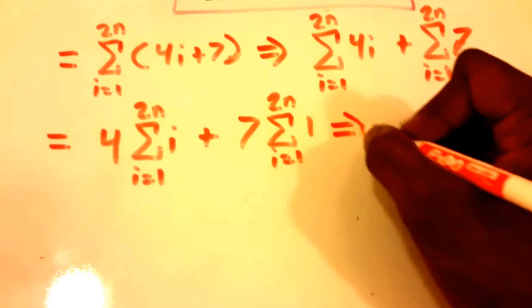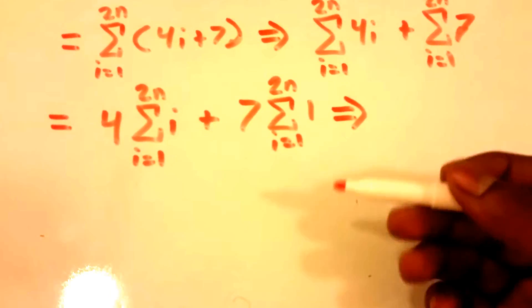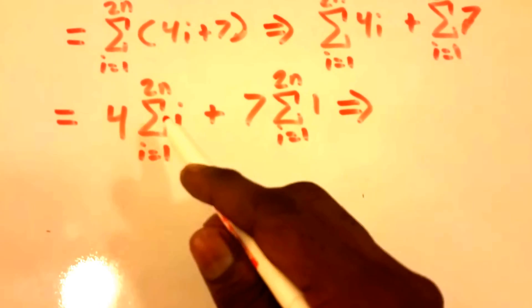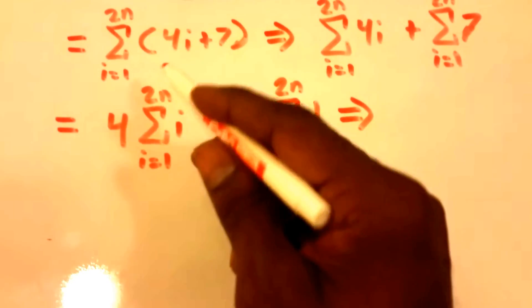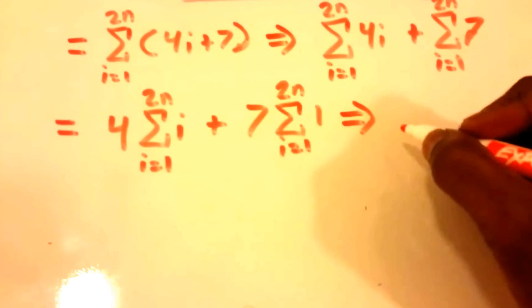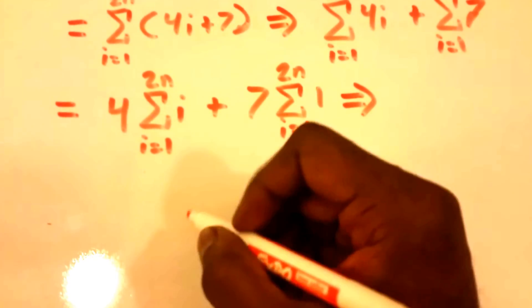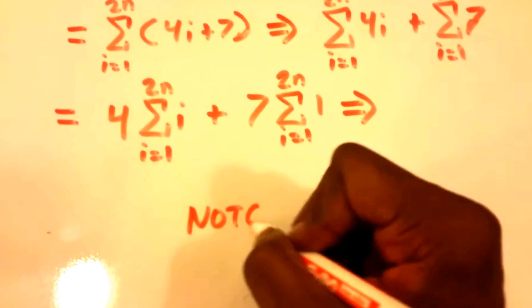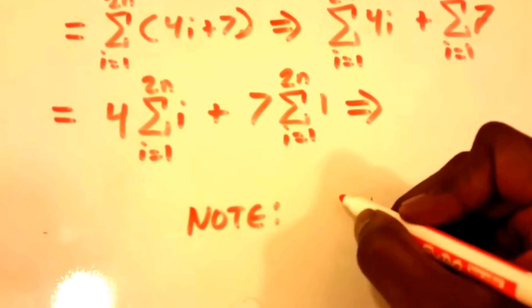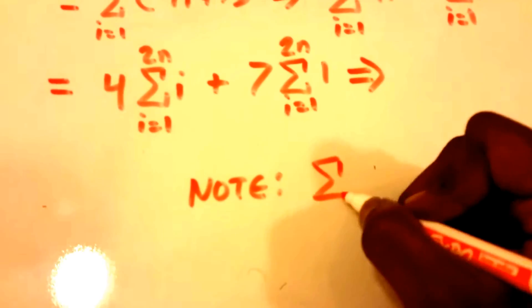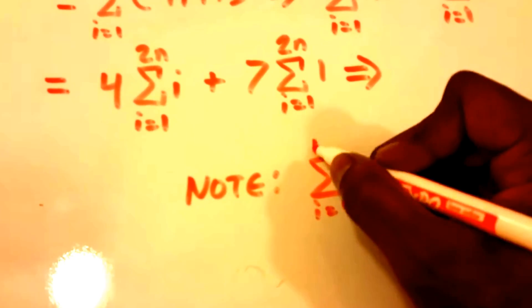Okay, so now we can use some formulas. I'm going to put a little note here for you guys so you can see the formula. The formula says if we have a summation from i equals 1 to n of i, then this is equal to n times n plus 1 divided by 2.